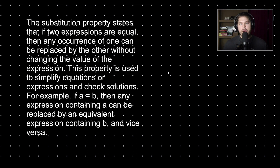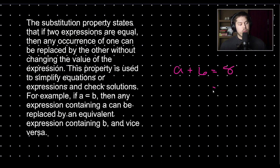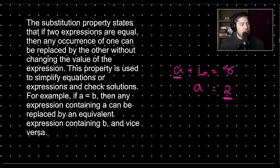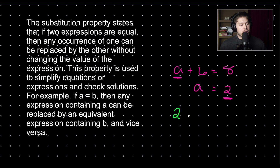An example of when we use the substitution property is in checking work. Let's say we have the expression A plus 6 equals 8. We can solve via algebra — we subtract 6 on both sides to get that A equals 2. Then we verify our answer by substituting in the value 2 for A. When we substitute in the 2, we get 2 plus 6 equals 8, and we have just verified our answer. That's an example of using the substitution property.